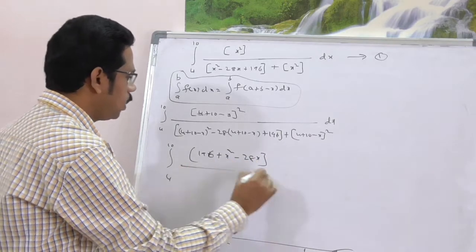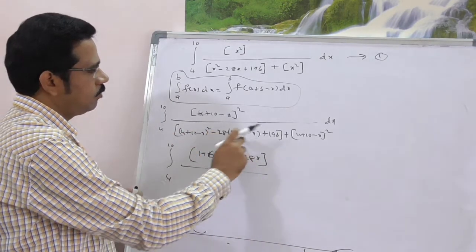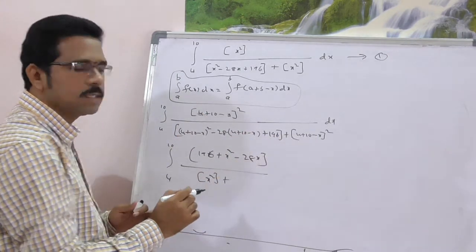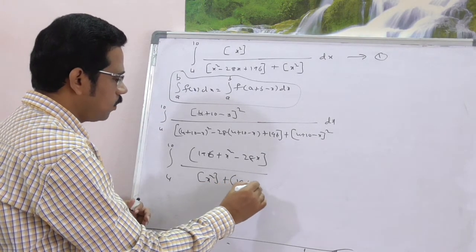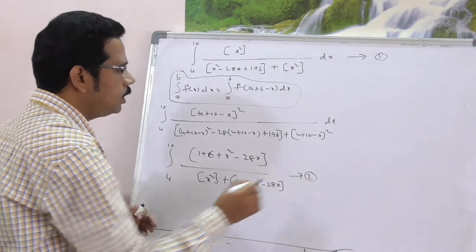Here also, 14 minus x whole square. Simplify this again, you get this is nothing but x square plus 196 plus x square minus 28x. Let it be equation number 2.